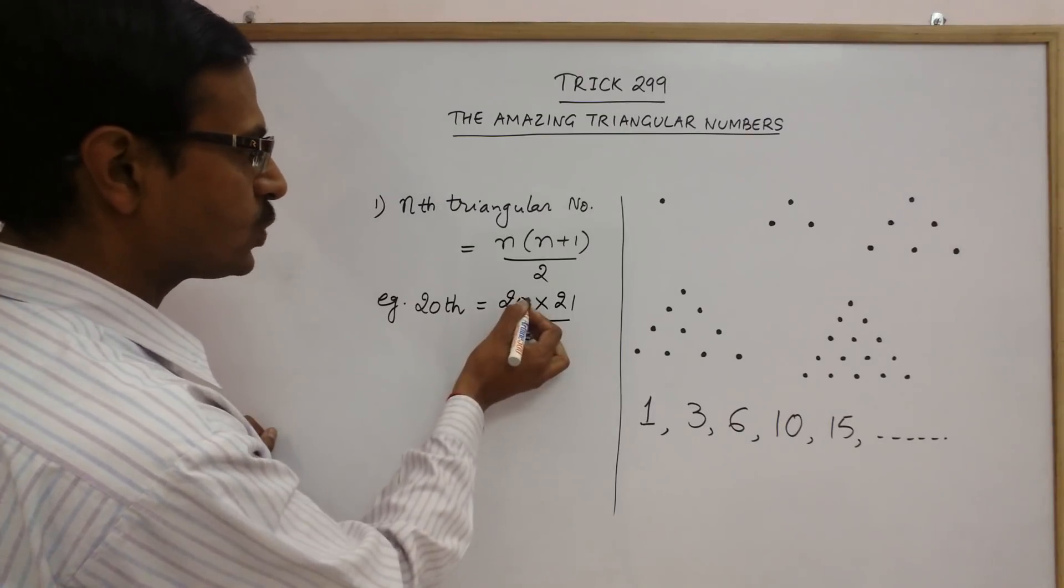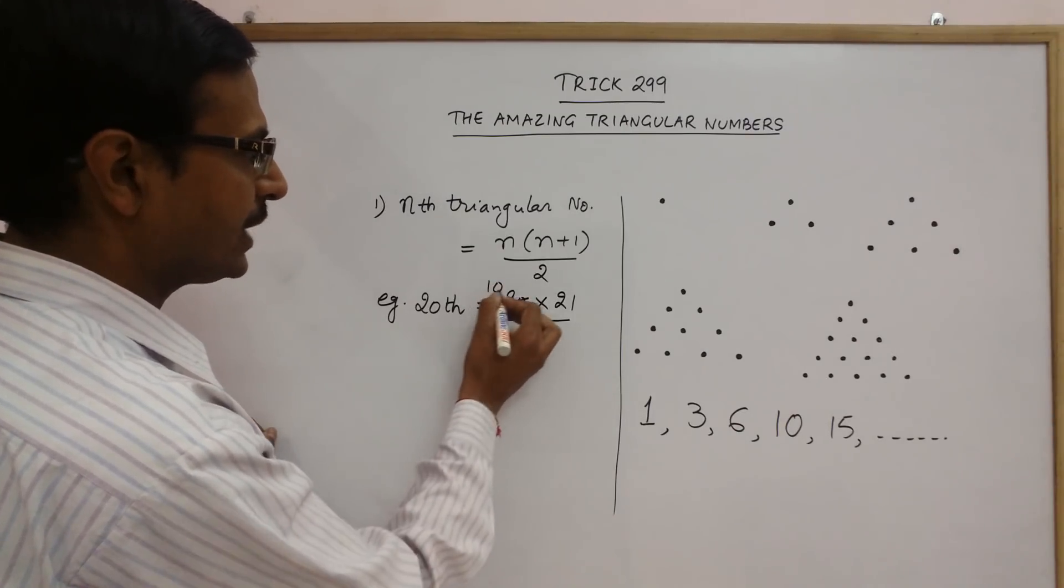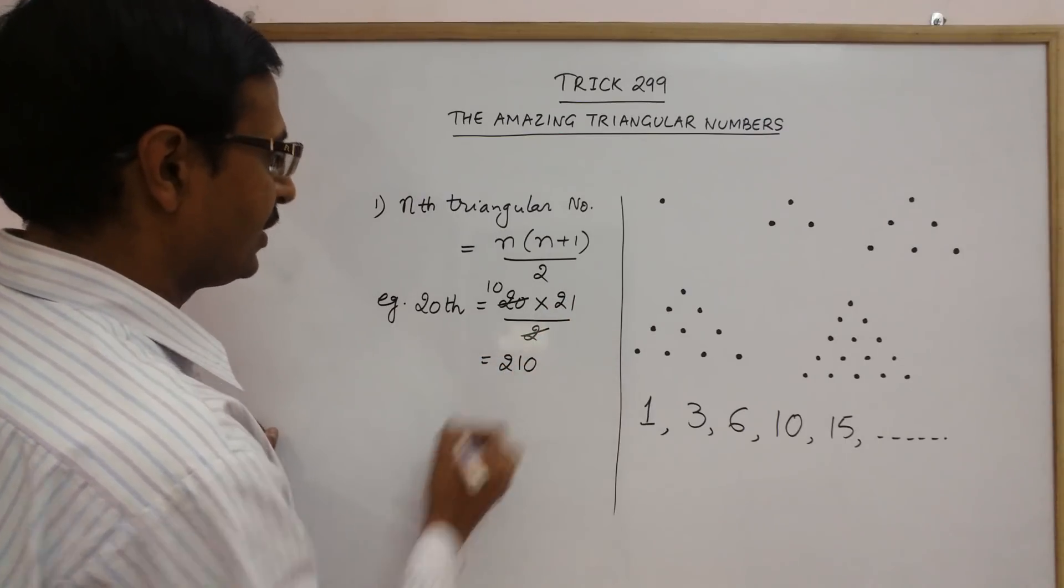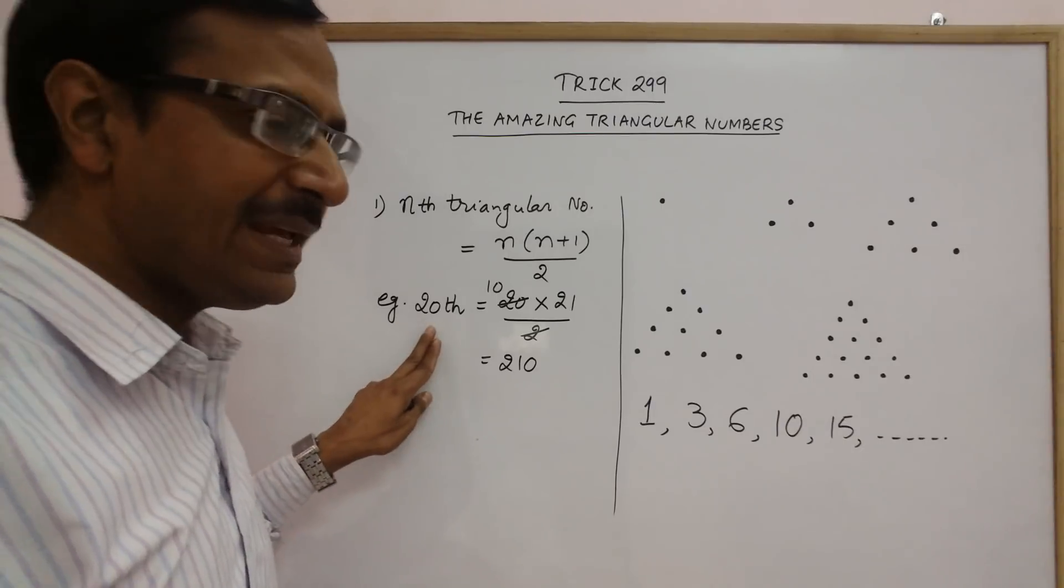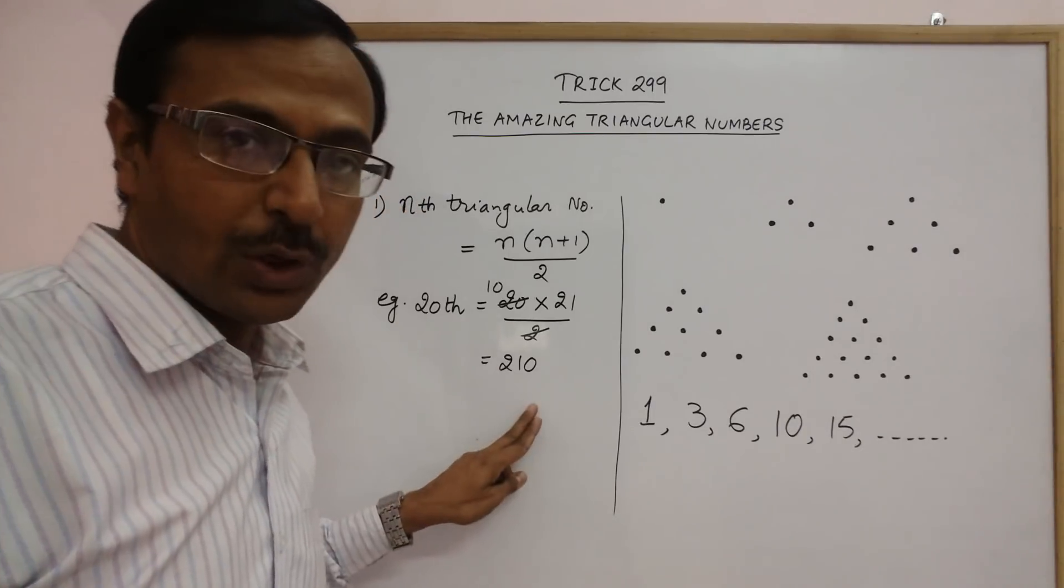So, you can cancel this 2 with 20, you get 10. So, 10 into 21 is 210. So, in this series of numbers, the 20th triangular number will be 210.